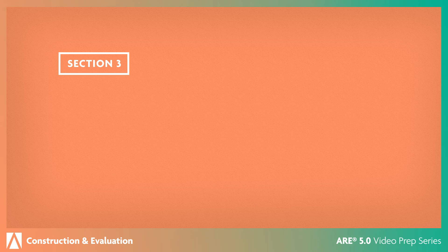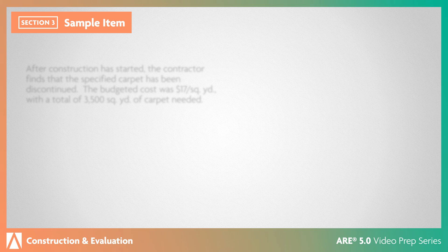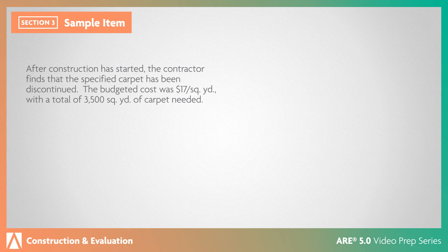The administrative procedures and protocol section is about the documentation necessary for the construction process. Clear written communication is essential. Let's look at a sample question. After construction has started, the contractor finds that the specified carpet has been discontinued. The budgeted cost was $17 per square yard, with a total of 3,500 square yards of carpet needed.